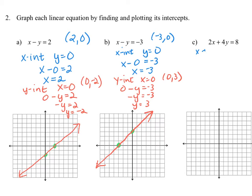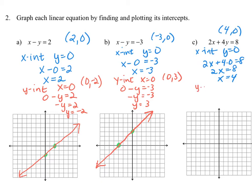Our x-intercept occurs where y is equal to 0. Substituting y with 0, the resulting equation is 2x plus 4 times 0 is equal to 8, or 2x is equal to 8, meaning x is equal to 4. So the point corresponding to the x-intercept is (4, 0). For the y-intercept, we let x equal 0 and get 2 times 0 plus 4y is equal to 8. Solving this gives 4y is equal to 8, or y is equal to 2. So that corresponds to the point (0, 2).